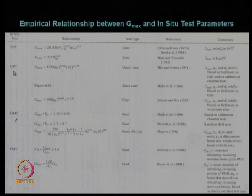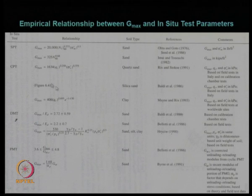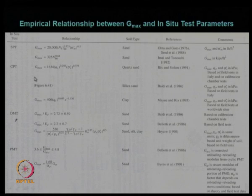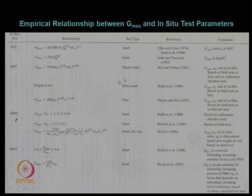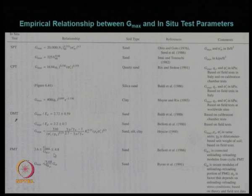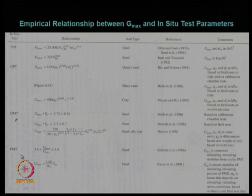From CPT, empirical G_max relationships exist for quartz sand, silica sand, and various soil types as proposed by various researchers. Empirical relationships are also available for the dilatometer test (DMT) and pressuremeter test (PMT).